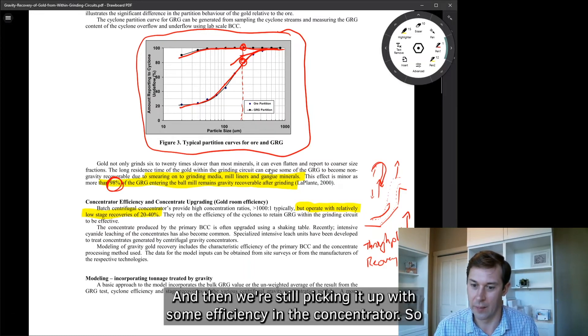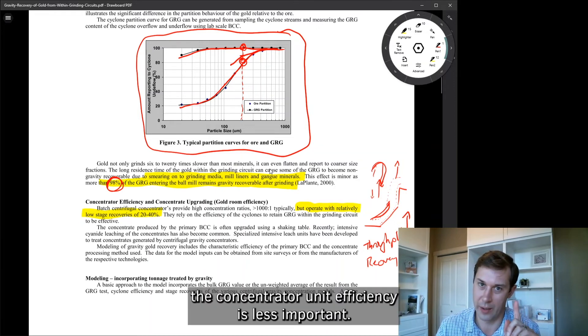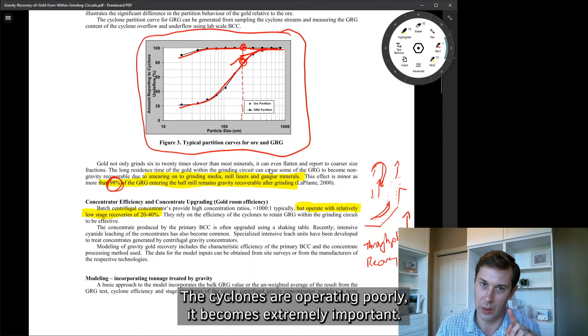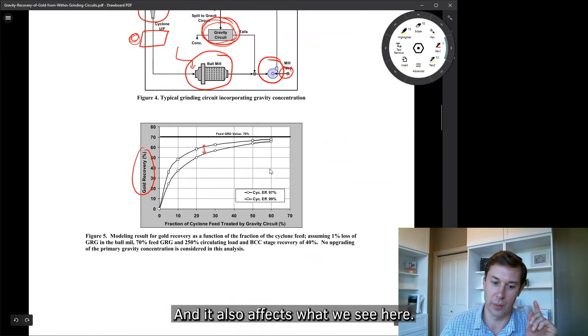And because the cyclone, as long as the cyclone is operating efficiently, because the cyclone is returning the gold back to the circuit, it doesn't matter so much that the overall recovery is low because we're keeping the gold in the circuit with our very efficient cyclones. And then we're still picking it up with some efficiency in the concentrator. So as long as the cyclones are operating well, the concentrator unit efficiency is less important. But if cyclones are operating poorly, it becomes extremely important.